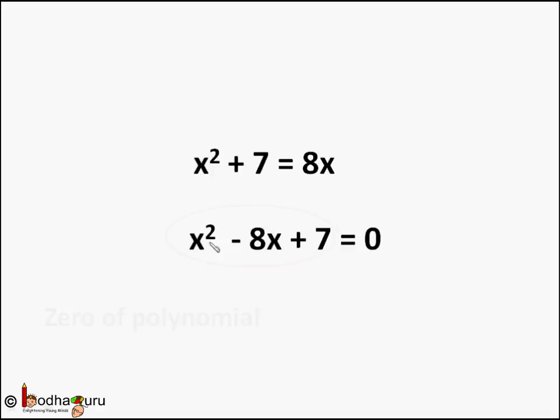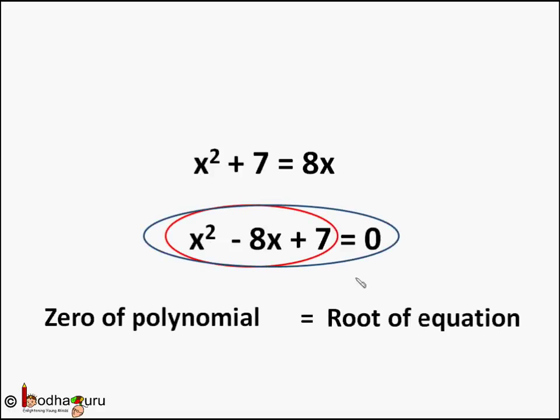Now the left side of this equation is a polynomial, so any value of x that makes the left side equal to 0 is the zero of the polynomial as well as the root of this equation.